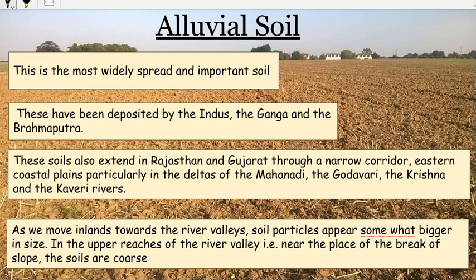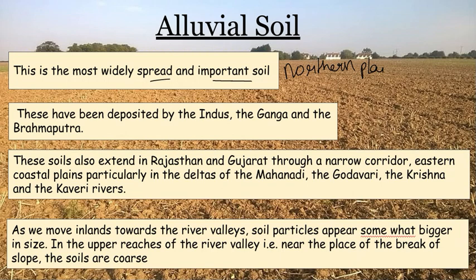Let us begin with alluvial soil. Alluvial soil is a very fertile and widely spread soil. It is found mostly in the northern plains, formed by the action of three major rivers — the Indus, Ganga, and Brahmaputra. This soil also extends into Rajasthan, Gujarat, and in the deltas of the Mahanadi, Godavari, Krishna, and Kaveri rivers.